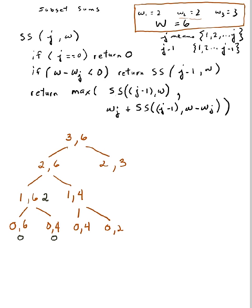Let us calculate our return values. The call (0,4) will return 0, and (0,2) returns 0. So I have 0 and 0 when j equals 1. The max is between 0 and W1 plus 0. W1 is 2, so the max will be 2. That means if I consider only item 1 with a maximum allowed weight of 4, the best I can do is a total weight of 2, achieved by choosing item 1.